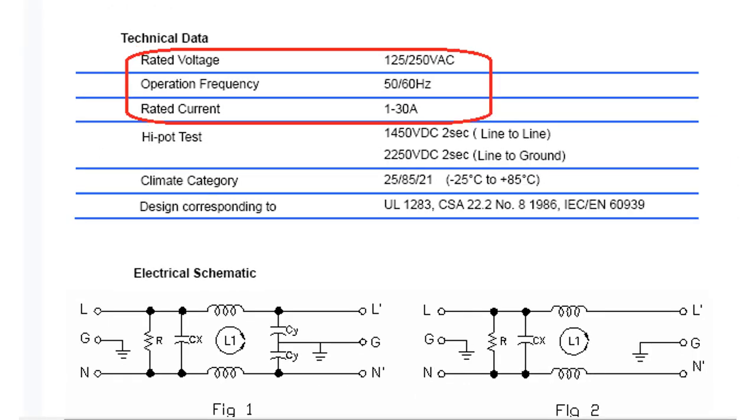Rated Current: Rated current is the maximum allowable continuous operating current at the rated voltage and specified ambient temperature.